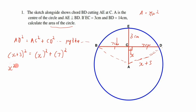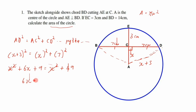Expanding: x² + 6x + 9 = x² + 49. The x² terms cancel, leaving 6x = 49 − 9 = 40. Dividing both sides by 6 gives us x.